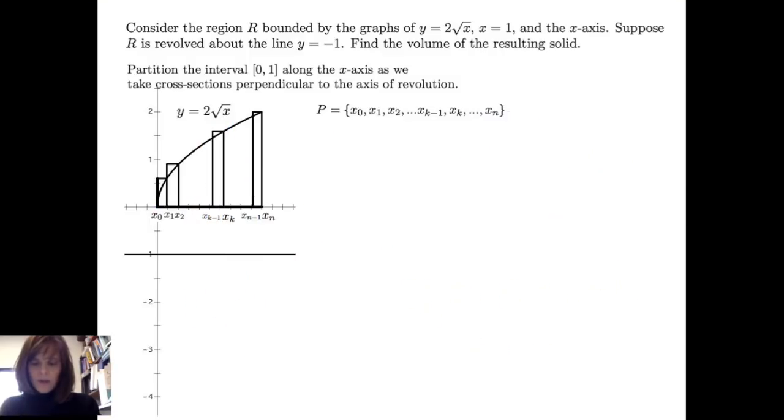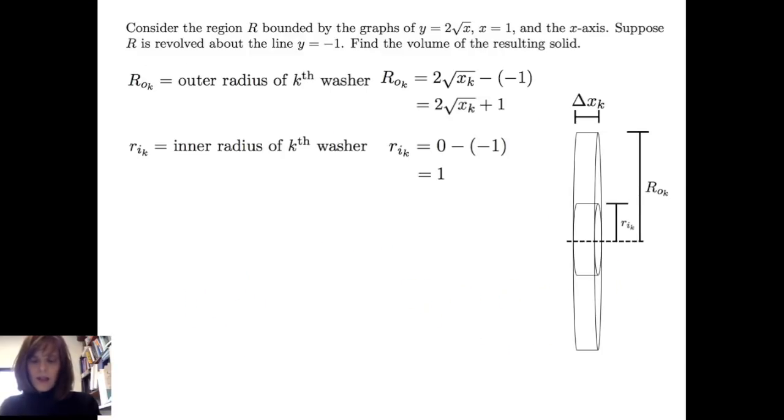If I put these pieces together, on the next slide I've got those same calculations and this diagram here. You can see that the outer radius of the k-th washer is 2 times the square root of x sub k plus 1. After simplifying, the inner radius of the k-th washer, r sub i sub k, is equal to 1.